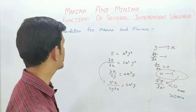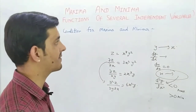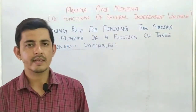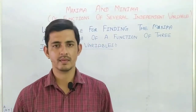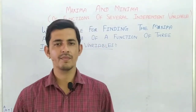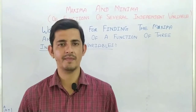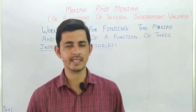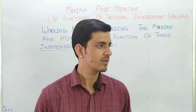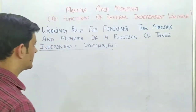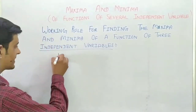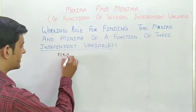Now, what do we do? We have to learn maxima and minima with several independent variables. Let's talk about functions of two or three variables. In those functions, there is a working role of maximum and minimum — how do we find whether a function is maximum or minimum? The first condition is the necessary condition. If you have a function f(x, y, z) with three variables.